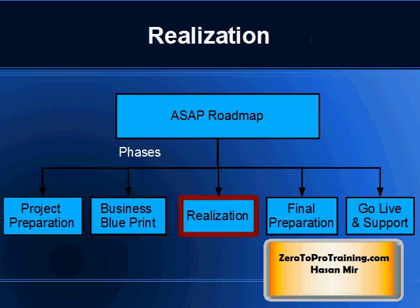The purpose of the Realization phase is to configure the R3 system. The configuration is carried out in two steps: baseline configuration and final configuration.